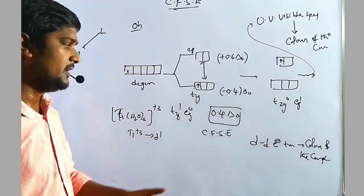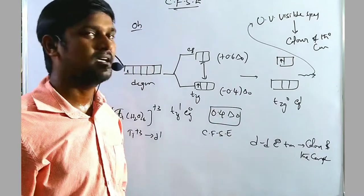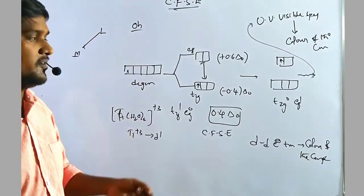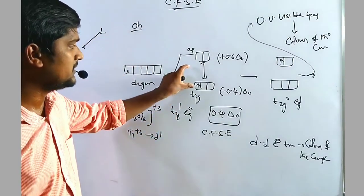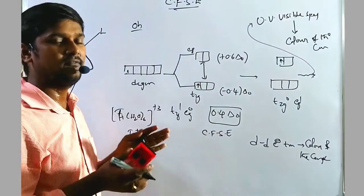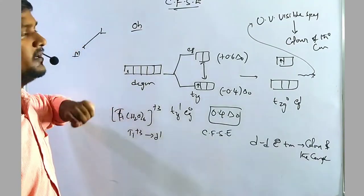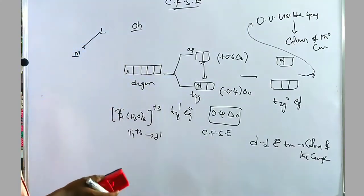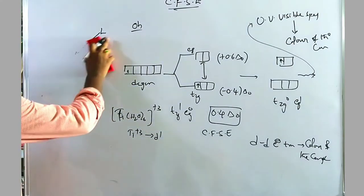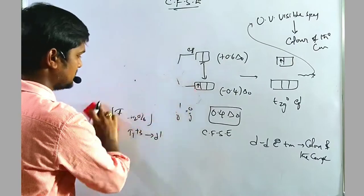The color of the complexes is due to d-to-d transition — every electron involved should be in d orbitals only. So we can conclude: d-d electronic transitions give rise to the color of the complexes. The quantity of energy released when splitting occurs is called the Crystal Field Stabilization Energy.